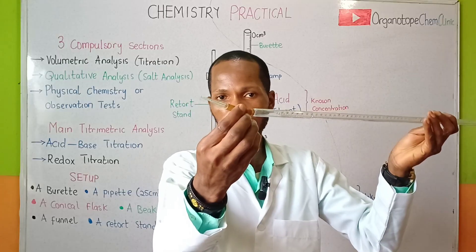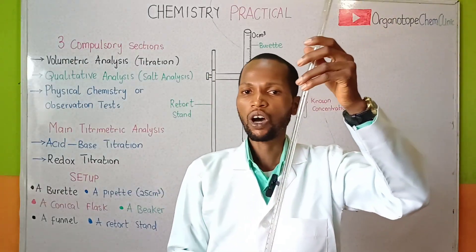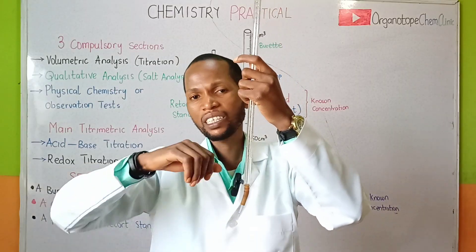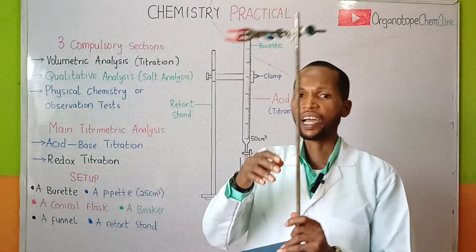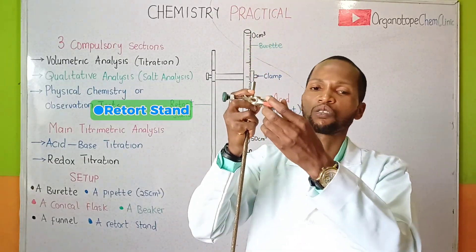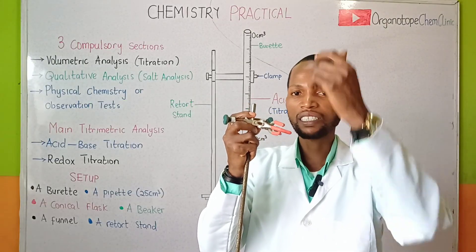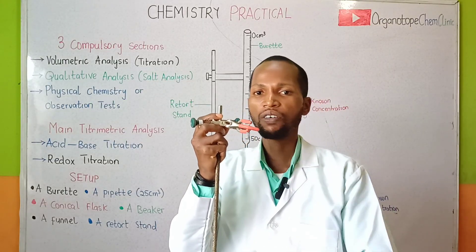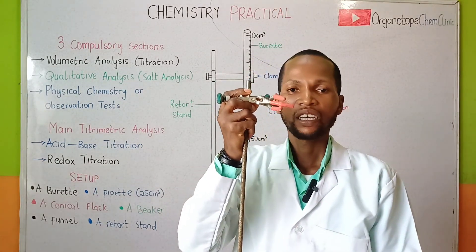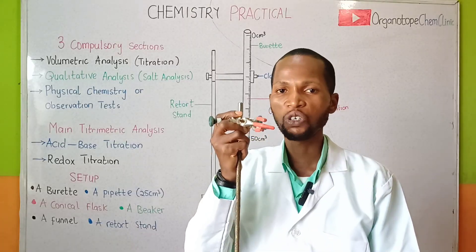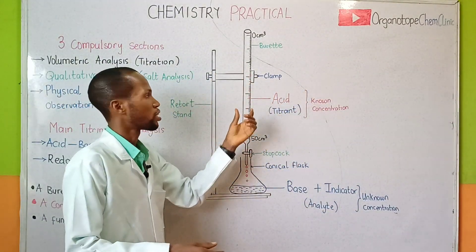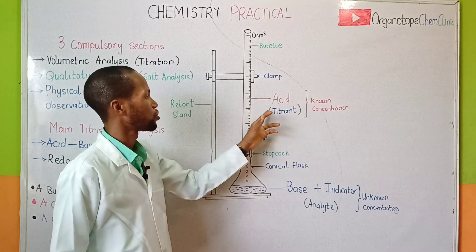The burette can be of different types: we can have a bob-type burette with a ball in the tube, or a clip burette where you apply pressure on the clip — it can also come in the form of a tap. Finally, we have the retort stand, which we use to clamp the burette so it stands erect or upright while running the titration, helping you avoid errors due to parallax.